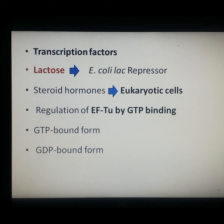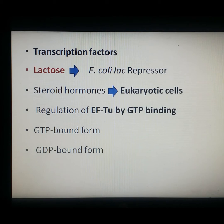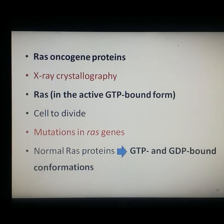Regulation of translation factors such as EF-Tu by GTP binding is another common mechanism by which intracellular protein activity is controlled. EF-Tu is a prokaryotic elongation factor responsible for catalyzing the binding of aminoacyl-tRNA to the ribosome. The GTP-bound form of the protein is the active conformation, while the GDP-bound form is inactive. Many cellular proteins are similarly regulated by GTP or GDP binding.